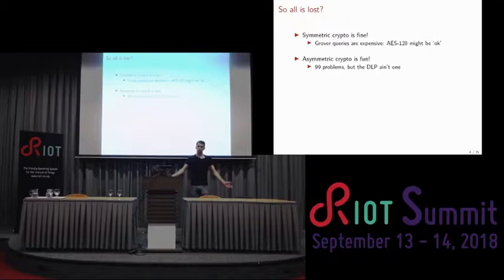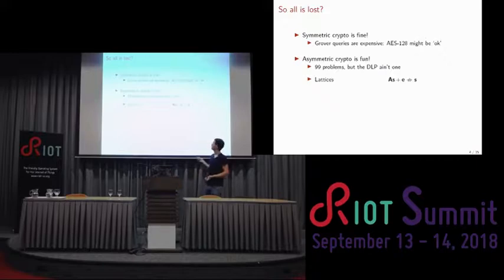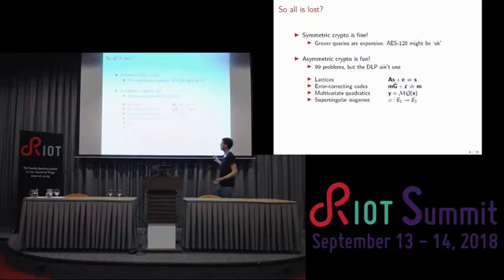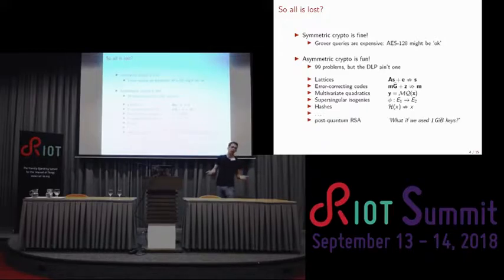There are other problems we can base crypto on. The discrete logarithm problem is not the only option. There are lattices, error-correcting codes, multivariate cryptography, supersingular isogenies, and hash-based schemes — all sorts of interesting problems with different properties. They may not be as fast or as compact, but it turns out you can actually use these for crypto. And if you scale things up, it still works.